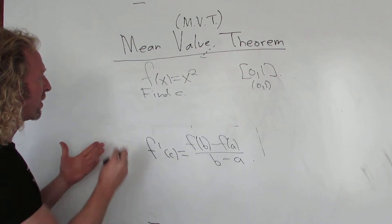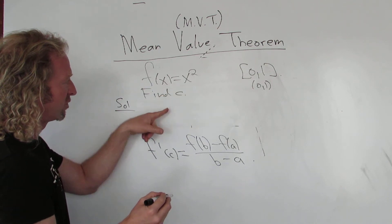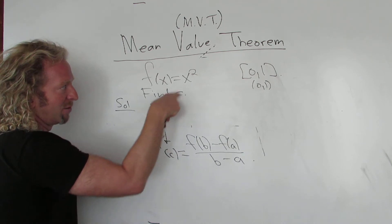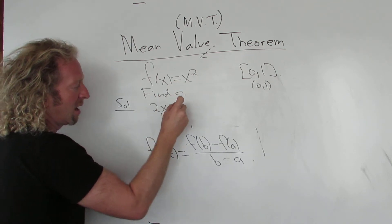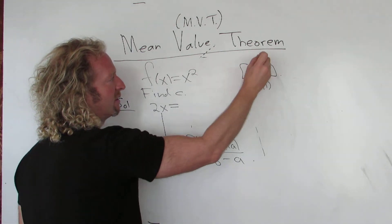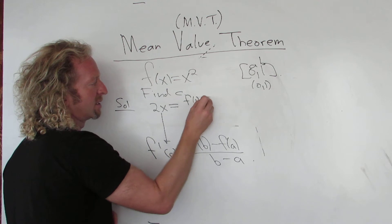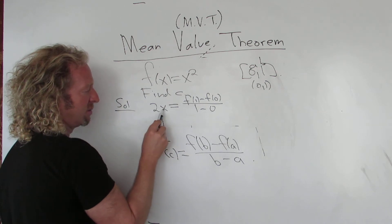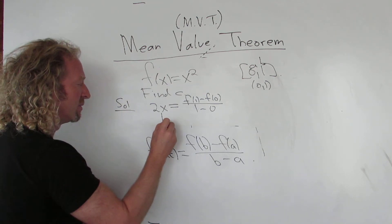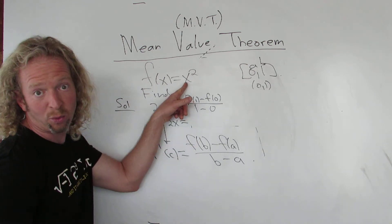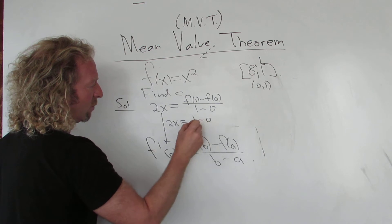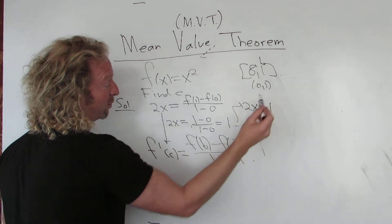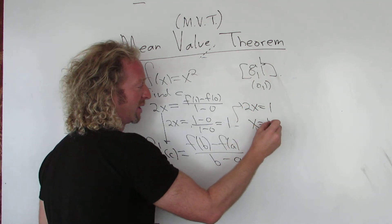To find C, all we have to do is use this equation. We take the derivative, which is 2x. We set it equal to F of B minus F of A over B minus A — so F of 1 minus F of 0 over 1 minus 0. F of 1 is 1 (since 1 squared is 1), and F of 0 is 0. So we get 1 minus 0 over 1, which is 1. So 2x equals 1, divide by 2, and x equals 1/2. So C equals 1/2.